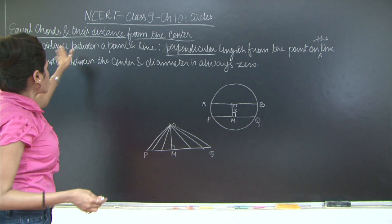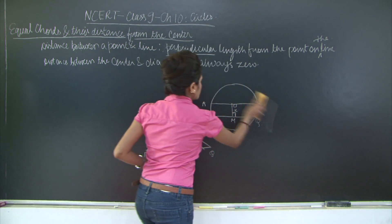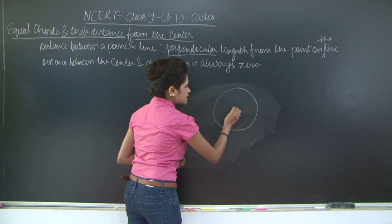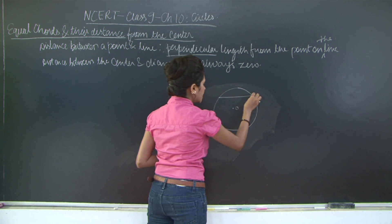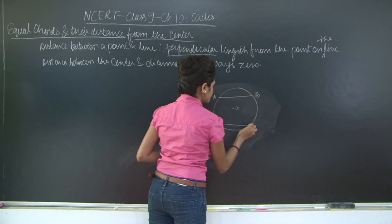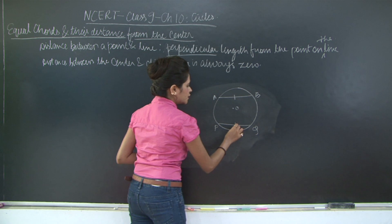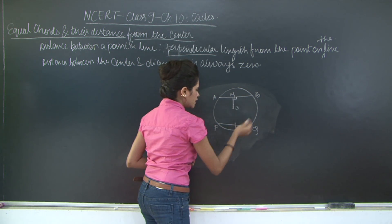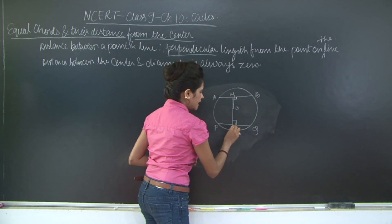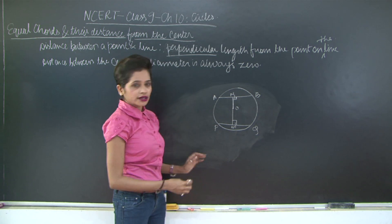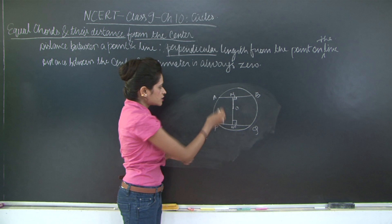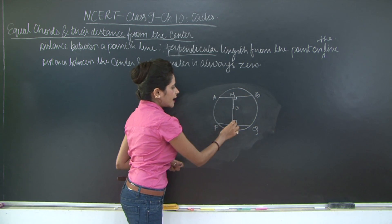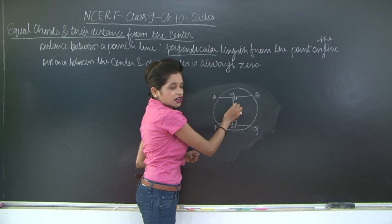Now let us look at equal chords and the distance from the center. We draw a circle on a piece of paper with center O and mark two equal chords AB and PQ, so AB equals PQ. Draw a perpendicular from O to AB at point M, and a perpendicular from O to PQ at point N. If we fold the paper so that A overlaps with P, we notice that B also overlaps with Q and OM overlaps with ON. This means OM equals ON.